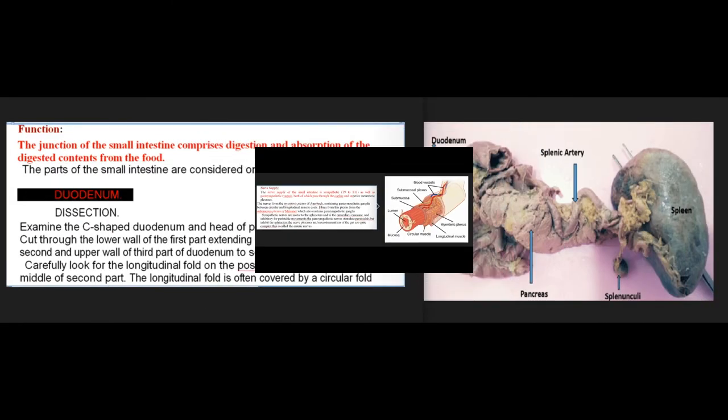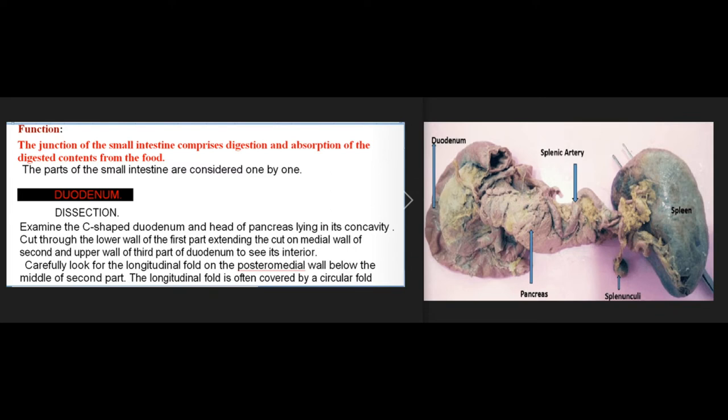The function of the small intestine comprises digestion and absorption of digested contents from food. The parts of the small intestine are considered one by one, beginning with the duodenum.